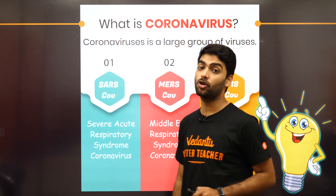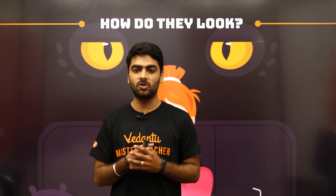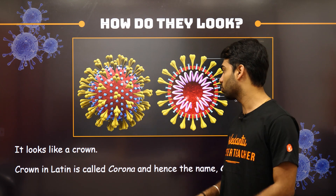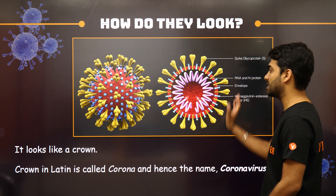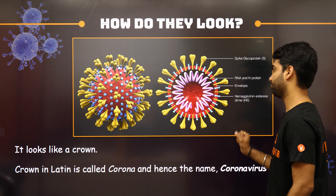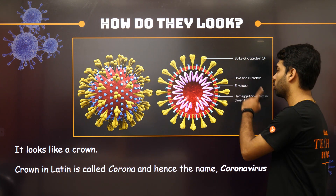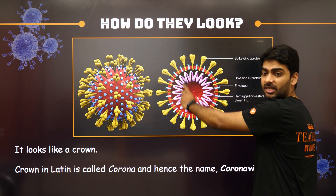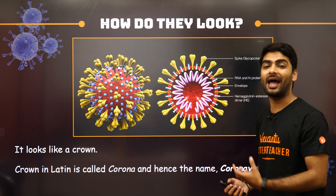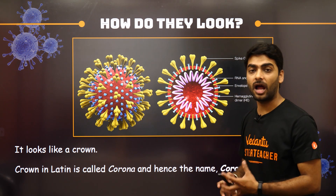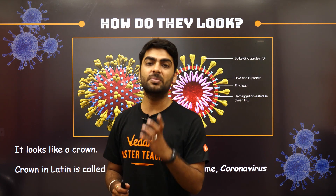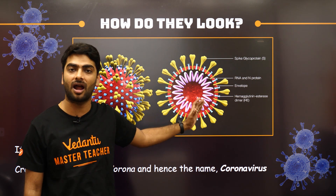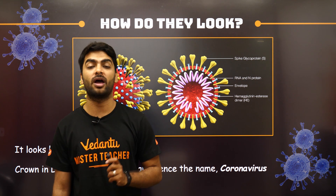How does this virus look? It has a genetic makeup in the center surrounded by a membrane, with spiky proteins, RNA, N-protein, and an envelope. This structure looks like a crown, and crown in Latin is called 'corona' — that is why this virus has been named coronavirus. Corona means crown, and the appearance of this virus resembles a crown.